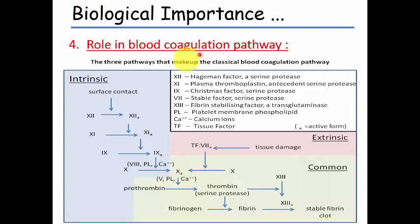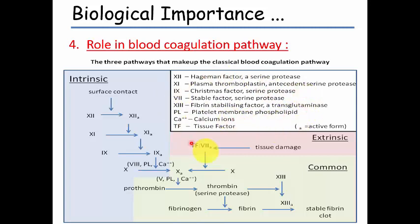Thromboplastin, which is made up of phospholipid, along with platelet membrane phospholipids and plasmalogen, all have a role in the coagulation regulation pathway.